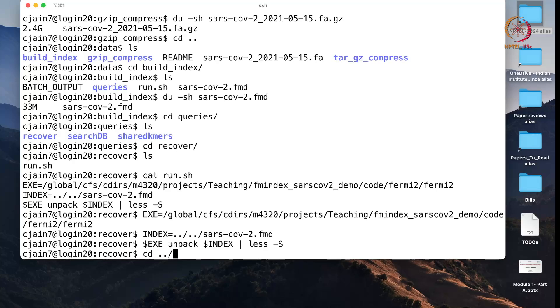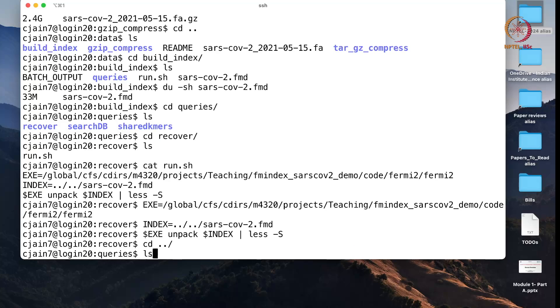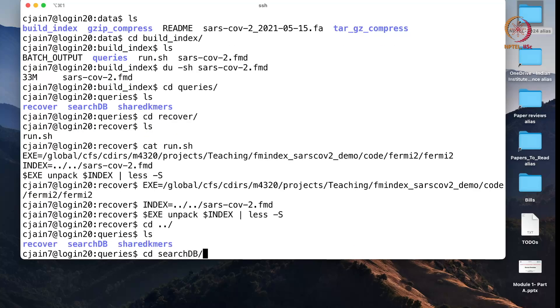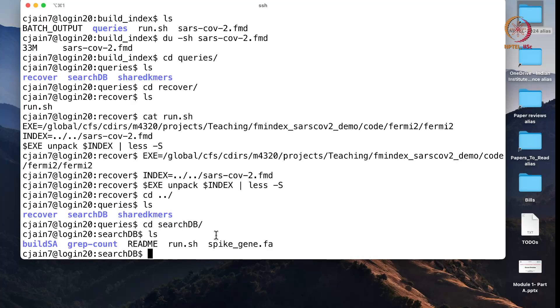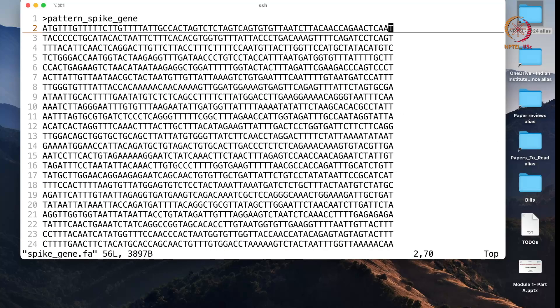Now, I want to show you that this index can support very fast efficient queries. For example, let's say I want to search for a spike gene protein gene sequence. I have a pattern that I want to search in the entire database.